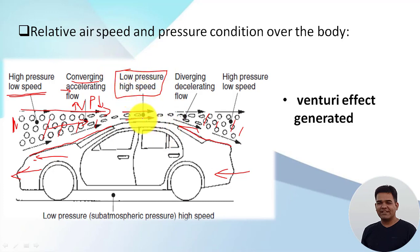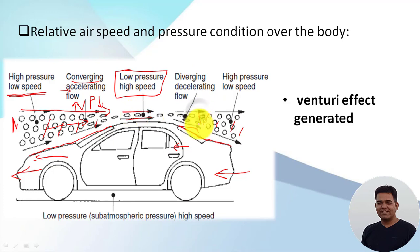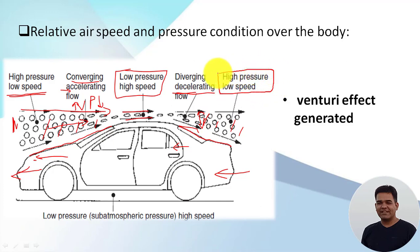Then, as the vehicle moves ahead, the particles approach the diverging section. Due to the increase in cross-sectional area, the speed of the moving air particles starts decreasing and the flow is in decelerating mode. At this point, again we have high pressure and low speed flow. This is what happens with the pressure over the body when the vehicle moves through atmospheric air.